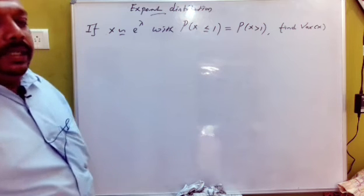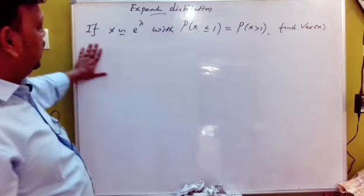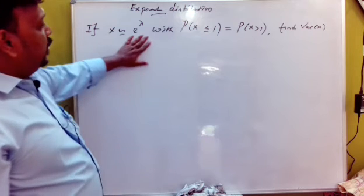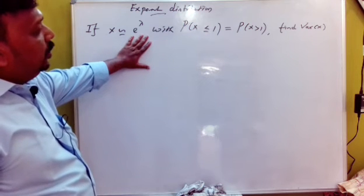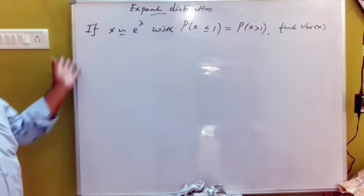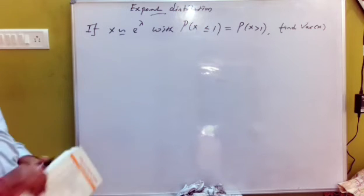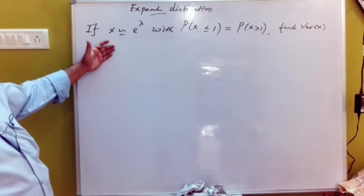If you ask this question: X approximately exponential with parameter lambda, find P(X less than or equal to p) and P(X greater than or equal to something), and find variance of x. Write the exponential distribution formula. If you don't know the exponential distribution, it is good to know it.